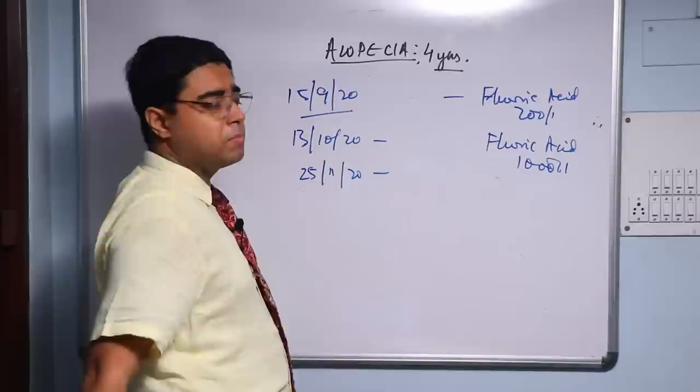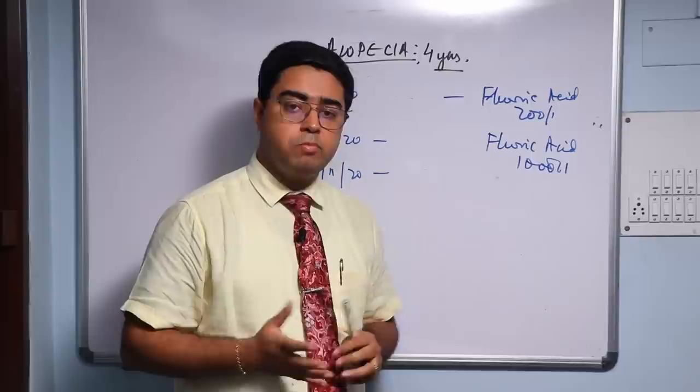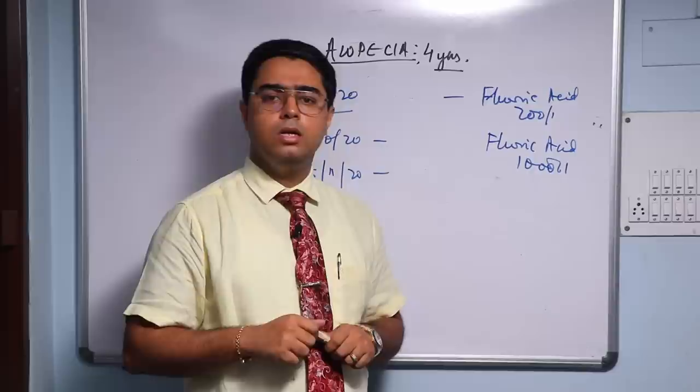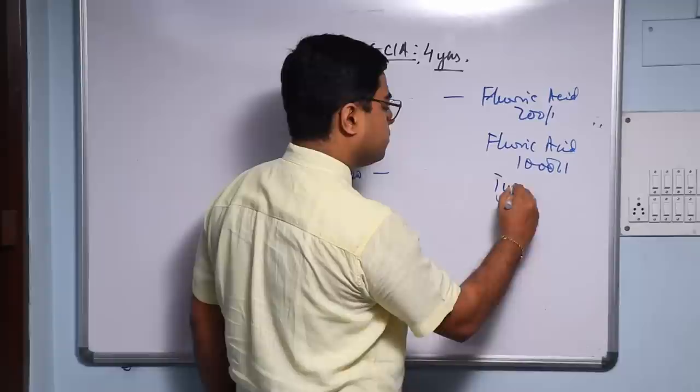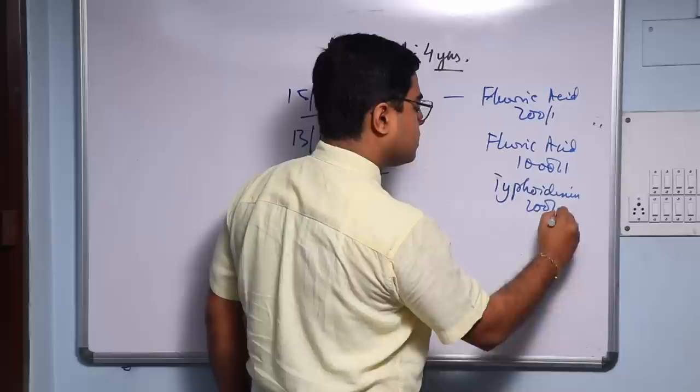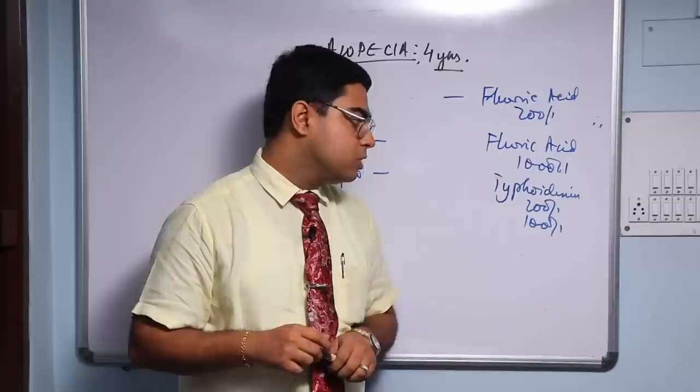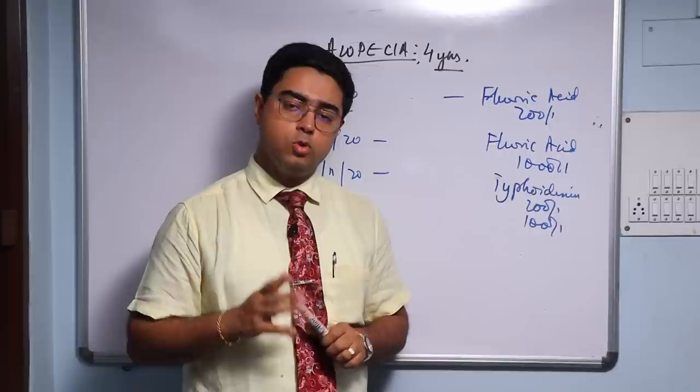Now I thought I have prescribed miasmatically, perhaps I am failing. I did not consider the entire symptom picture, I did not consider the etiology. On 25th of November I revisited the case again. I changed my prescription to Typhoidinum - two potencies, 200 followed by 1M. 200C sip for 3 days, 7 to 10 days gap or 2 weeks gap, then 1M another dose after that.